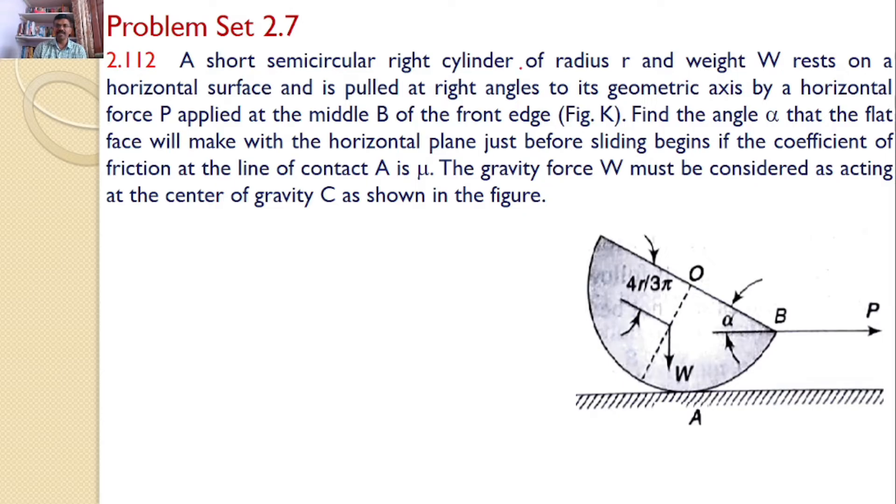A short semicircular right cylinder of radius r and weight W rests on a horizontal surface and is pulled at right angles to its geometric axis by a horizontal force P applied at the middle B of the front edge as shown in the figure. Find the angle α that the flat face will make with the horizontal plane just before sliding begins.